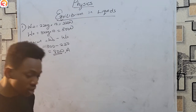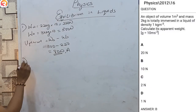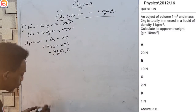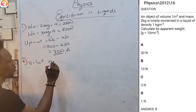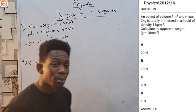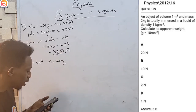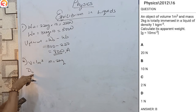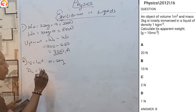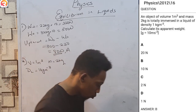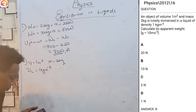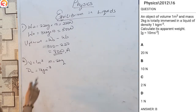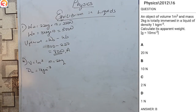Our next question comes from 2012, number 16. An object of volume 1 m³ and mass 2 kg is totally immersed in a liquid of density 1 kg/m³. We are asked to calculate its apparent weight. To find apparent weight, we know: apparent weight = weight in air minus upthrust. Weight in air = mg = 2 × 10 = 20 N.